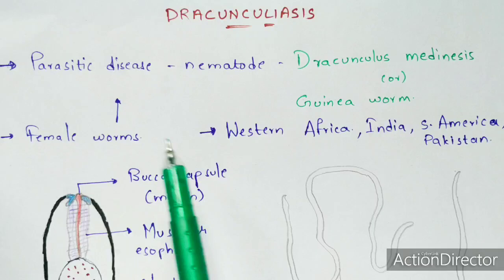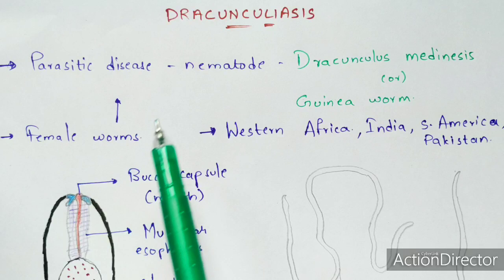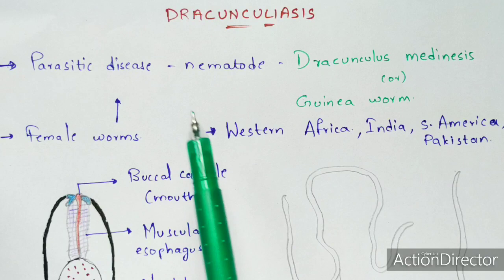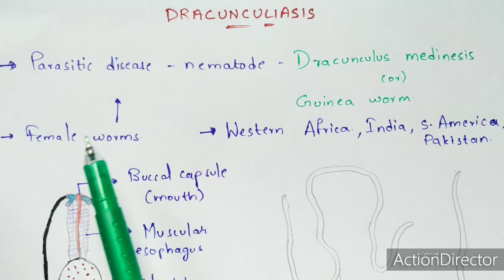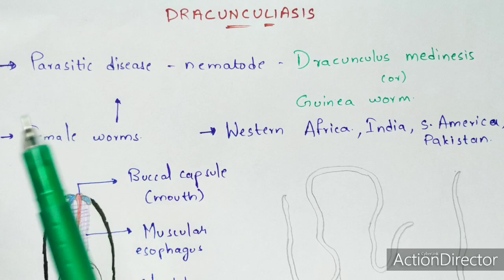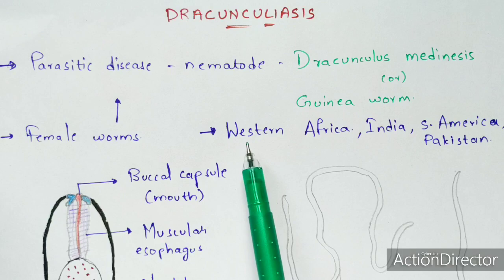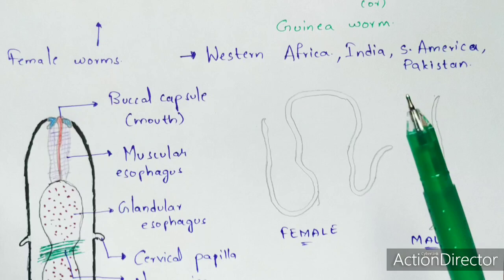Normally, the main cause of Dracunculiasis is the female worm, not the male worm. The male worm's only function is the process of mating or copulation, and after copulation the male worm dies. The remaining process is carried out by the female worm only. This disease is commonly seen in countries such as Western Africa, India, South America, and Pakistan.